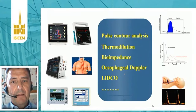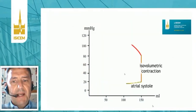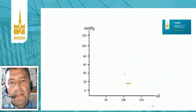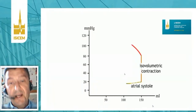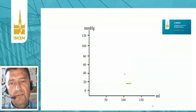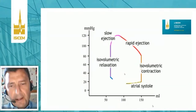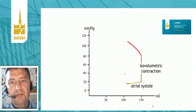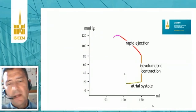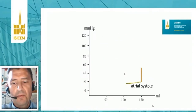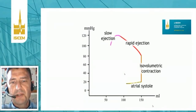Today I would like to draw your attention to the interaction between the heart and the circulation, and the importance of considering this when assessing and managing patients in intensive care. To do so, I need to bring you back to very basic physiology — the P-V loop, which everybody was taught at school.